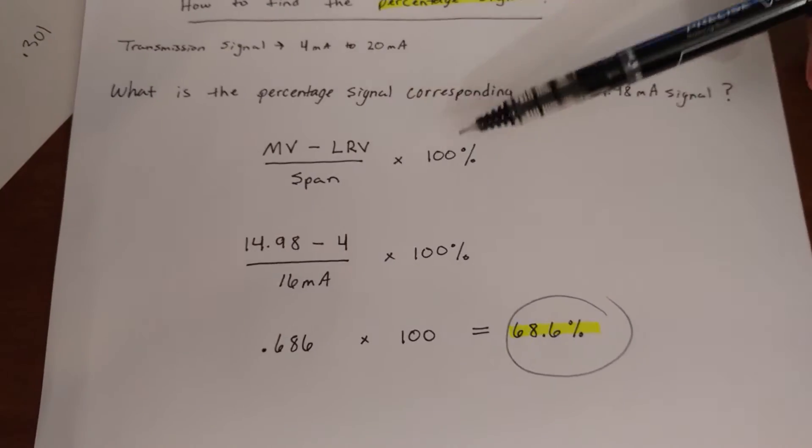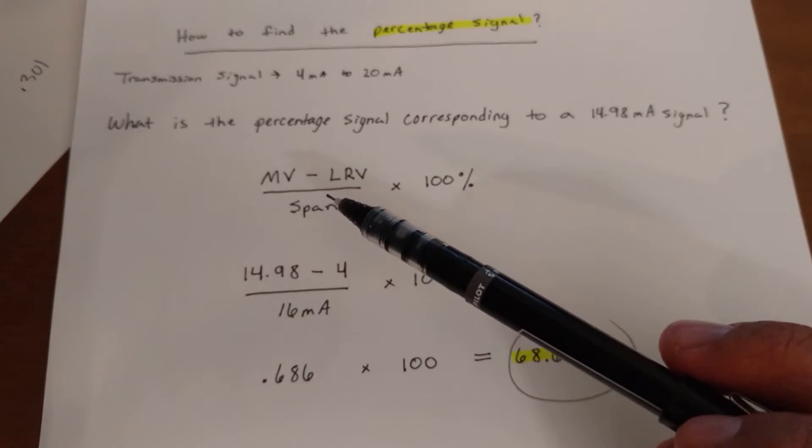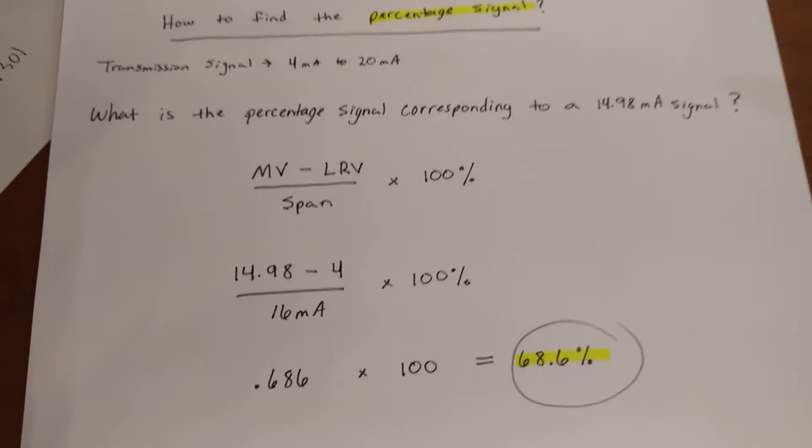Alright, and you're going to use this formula, which is going to be your measured value minus your lower range value divided by your span.